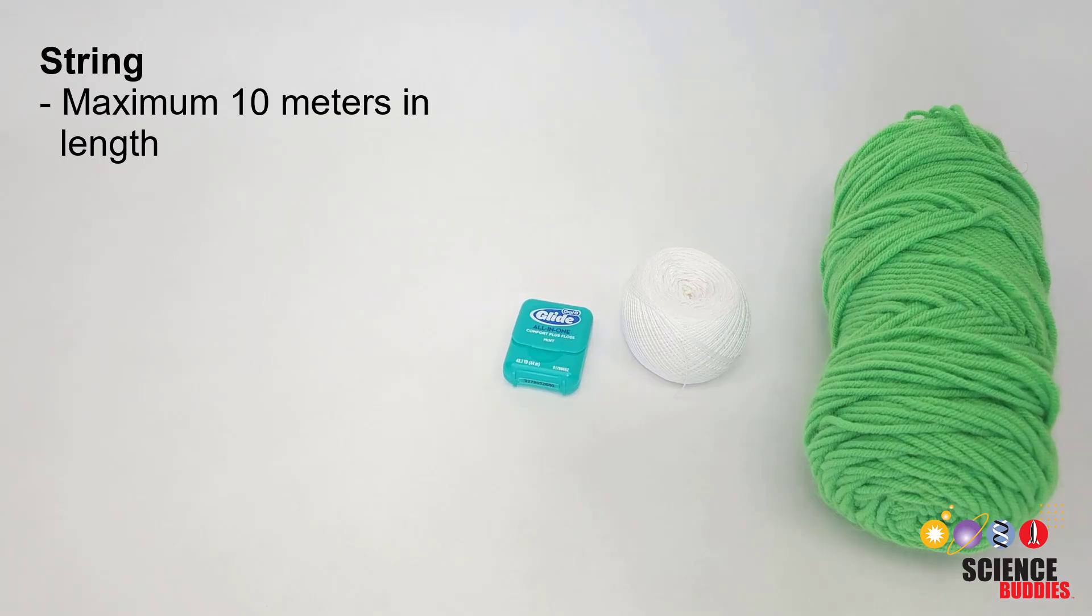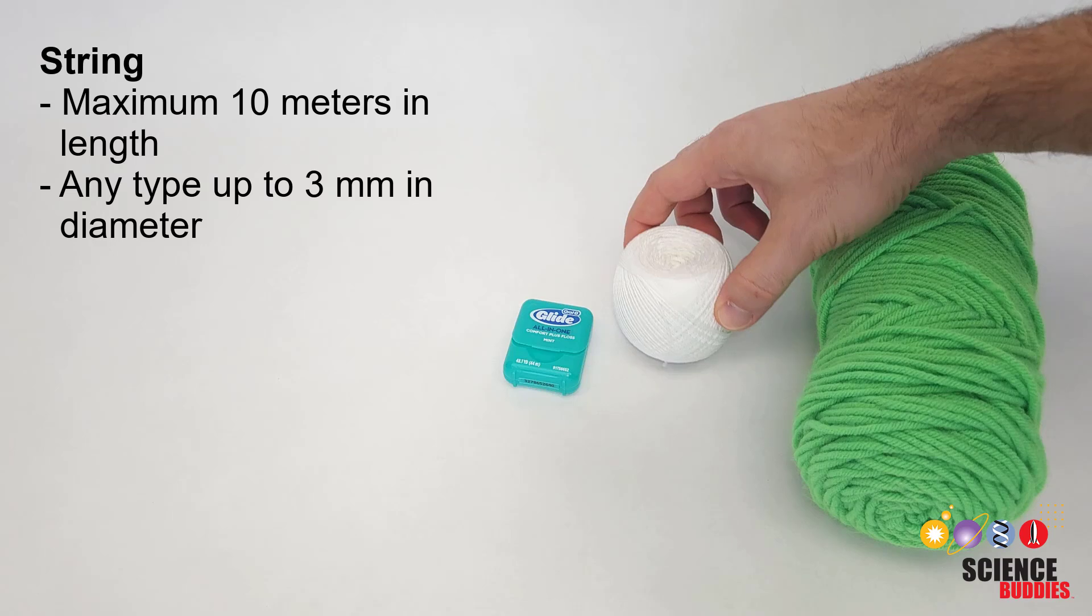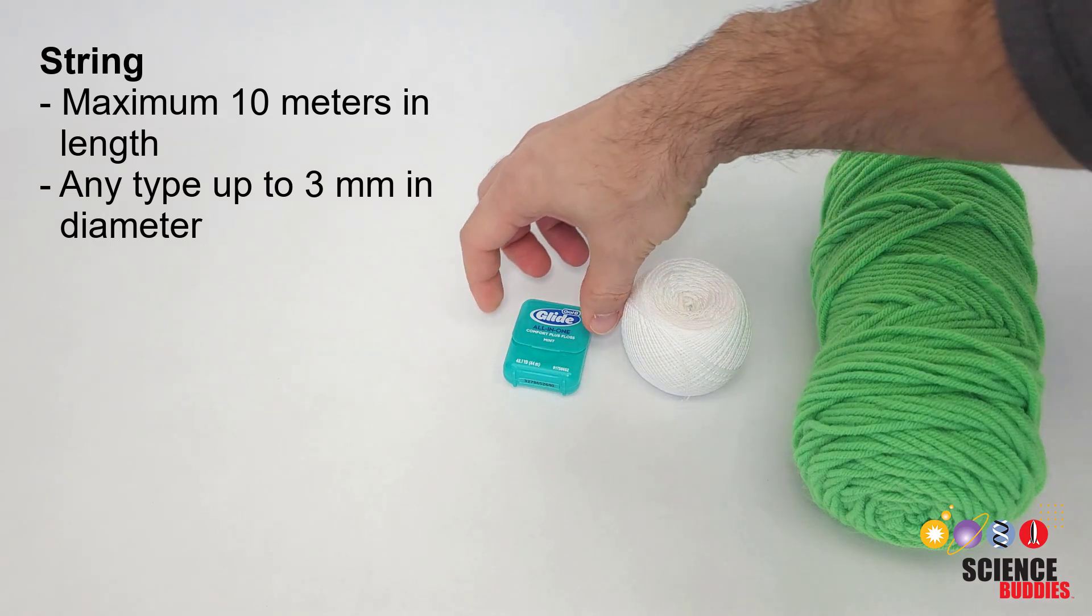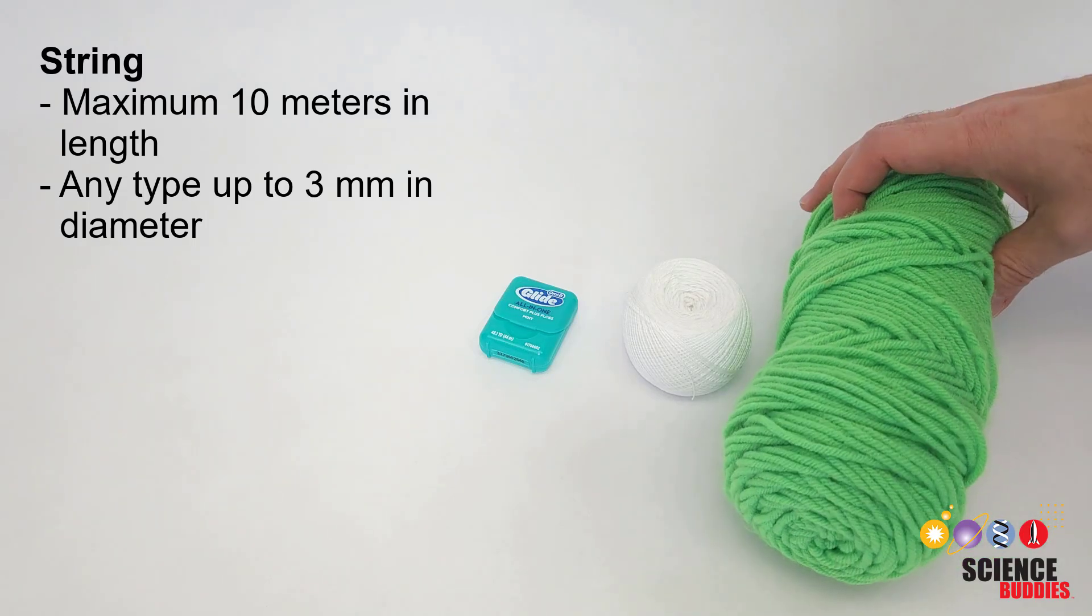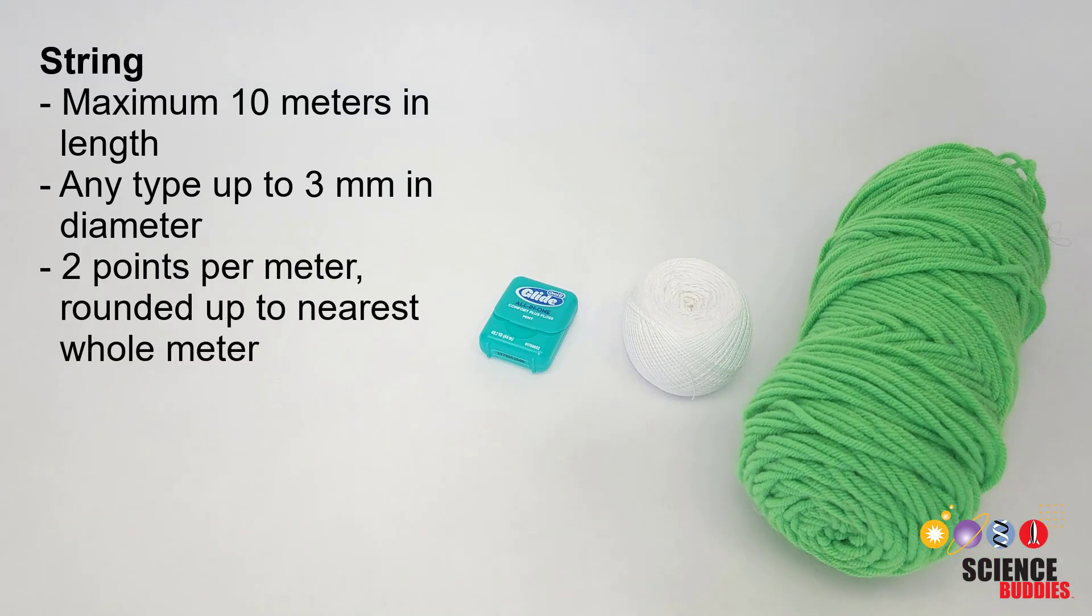You can use up to 10 meters of string. Any type up to three millimeters in diameter is allowed, such as dental floss, fishing line, cotton string, twine, yarn, or thread. String has a cost of two points per meter rounded up to the nearest whole meter.